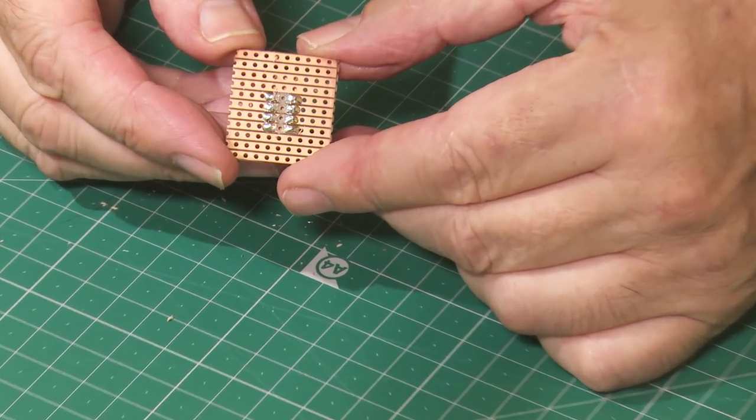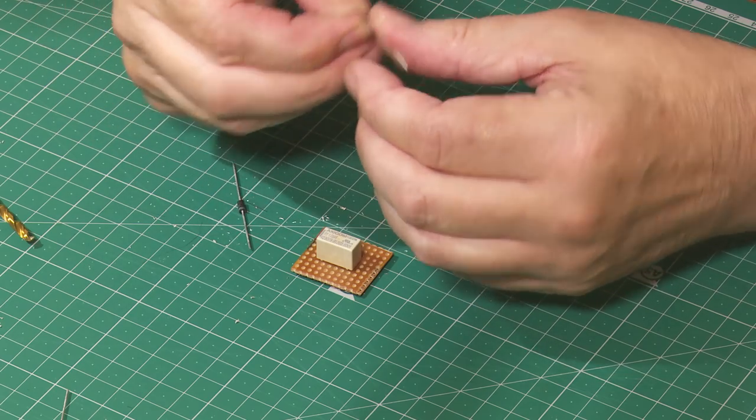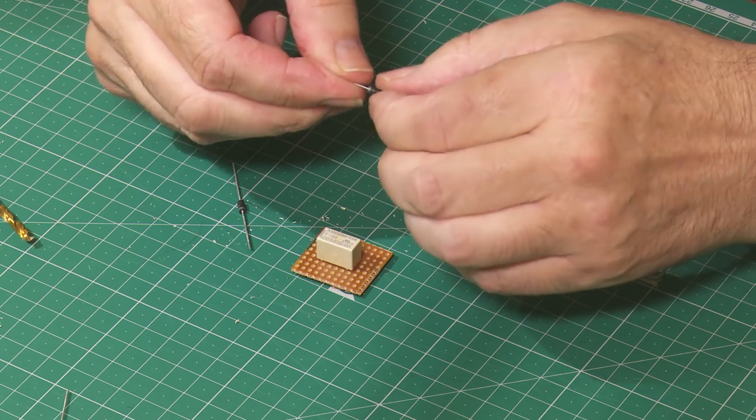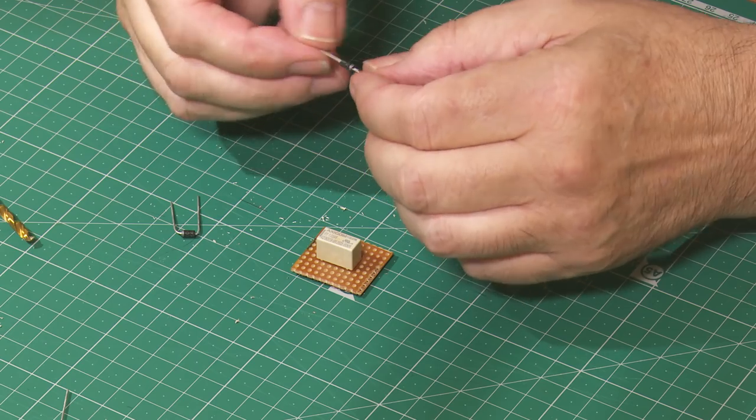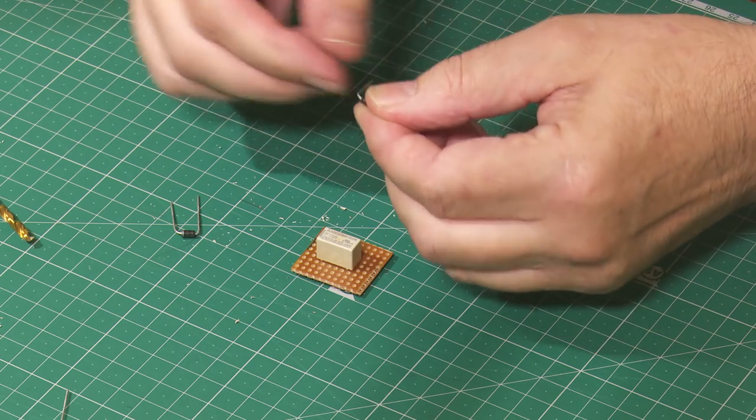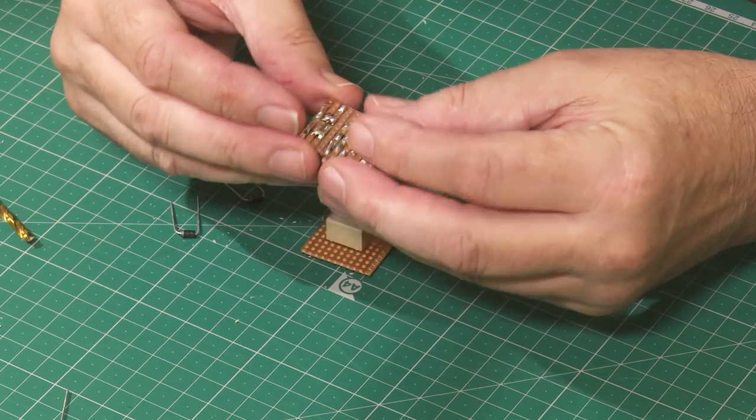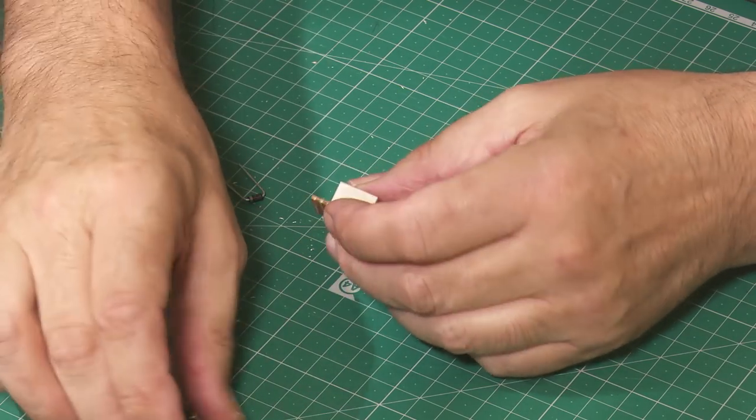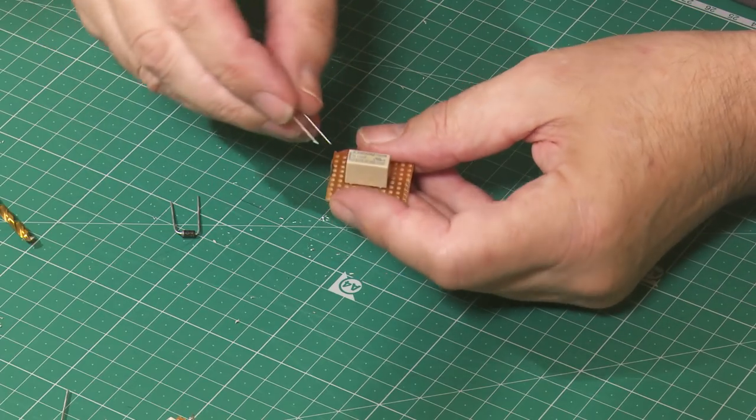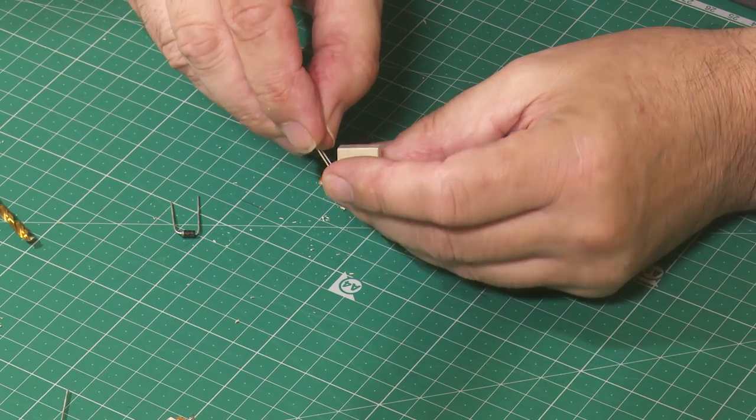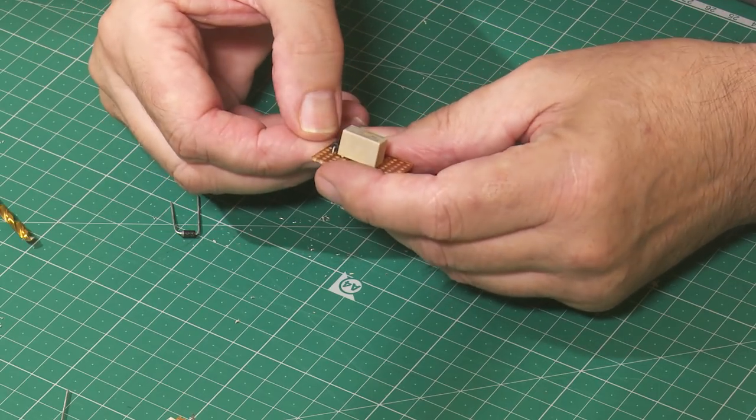Once those four strips have been isolated we move on to the diodes. These diodes are polarities conscious so you must put them in the right way around.